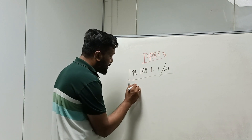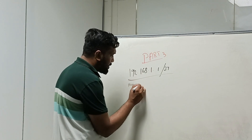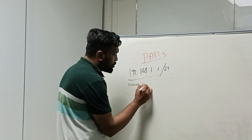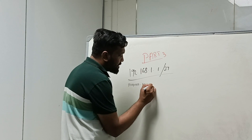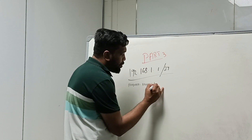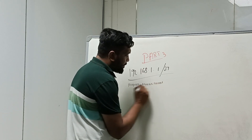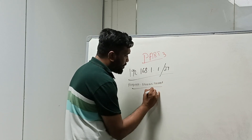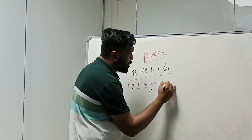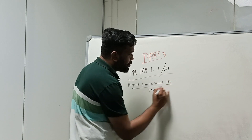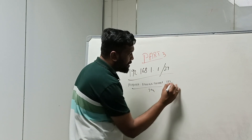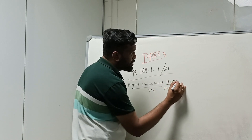Counting the bits across the octets: 1, 2, 3, 4, 5, 6, 7, 8 — one, two, three, four, five, six, seven, eight — one, two, three, four, five, six, seven, eight — one, two, three. That gives us /27. The remaining bits are 0.